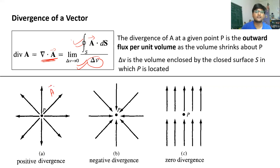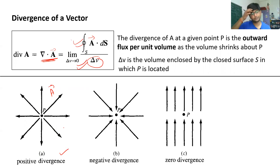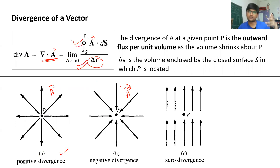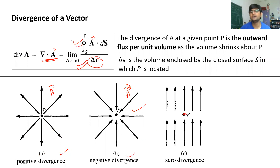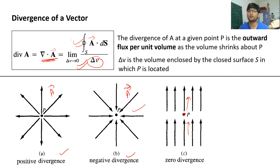In the diagram, point P has vector A going outward — this gives positive divergence. If the field lines of vector A are coming inside point P, it is converging, which is negative divergence, giving a negative quantity. In the third diagram, some lines come inside and some go outside, so they balance — what comes in goes out — giving zero divergence. So the overall divergence of that field is zero.